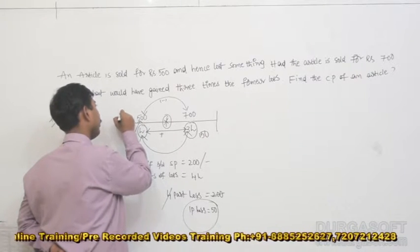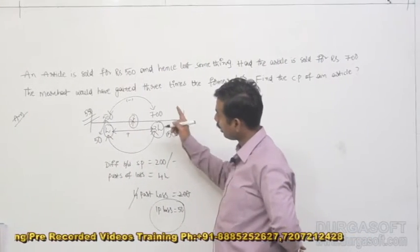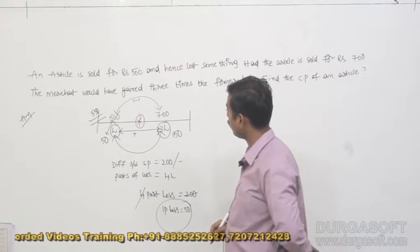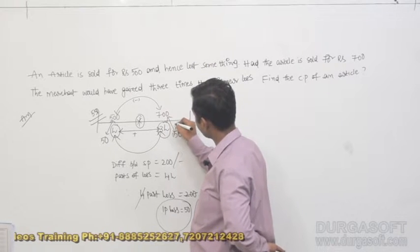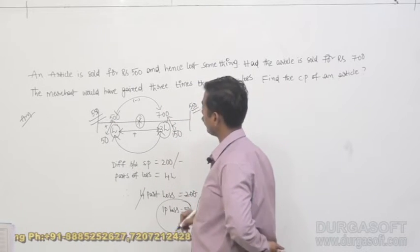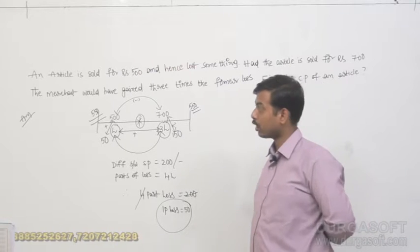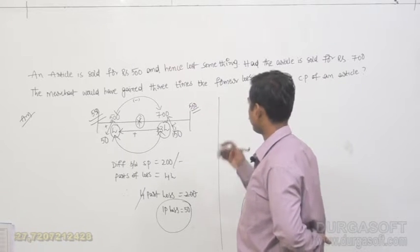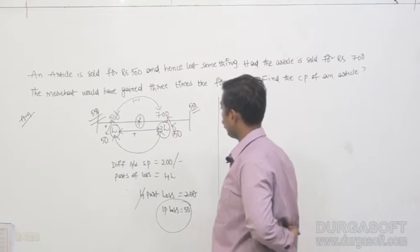Rs.500 plus Rs.50 — Rs.550 should be the cost price. Next, because of selling an article for Rs.700, he got Rs.150 as profit. Rs.150 profit means we have to eliminate that out of Rs.700. Rs.700 minus Rs.150 is Rs.550, so Rs.550 should be the cost price of the article. In these two conditions we have satisfied: cost price of the article is Rs.550.